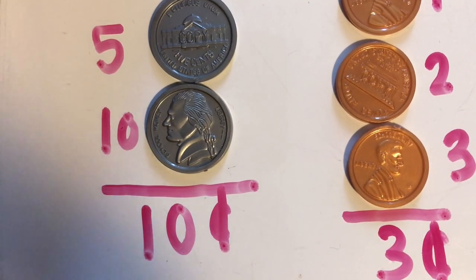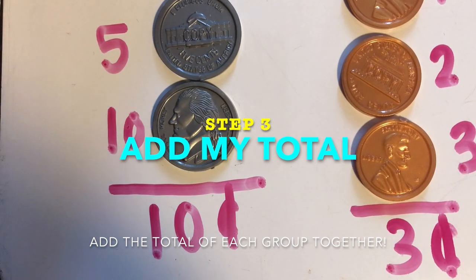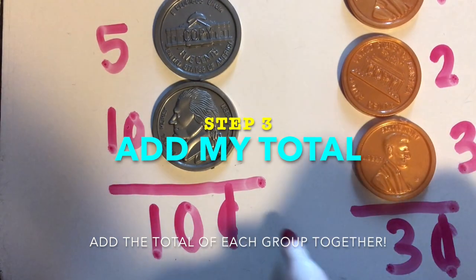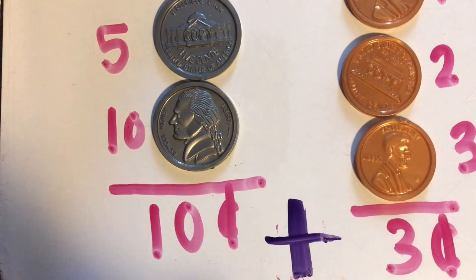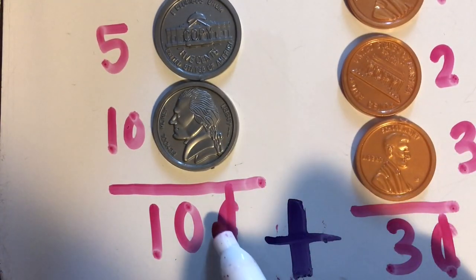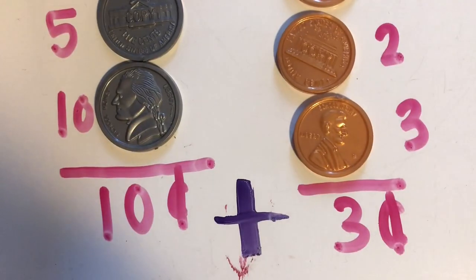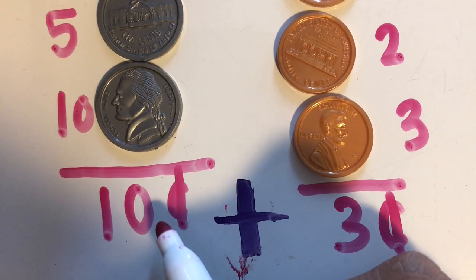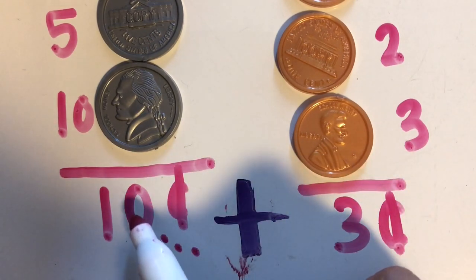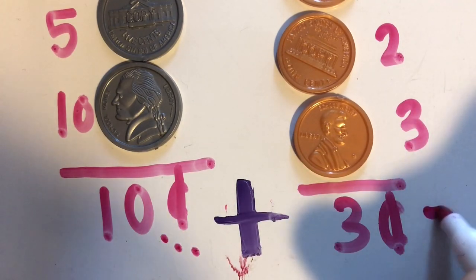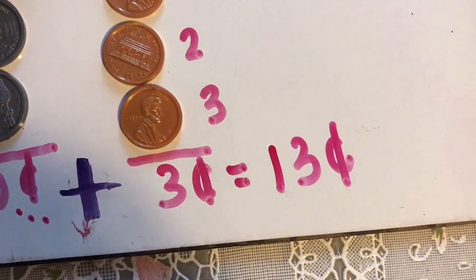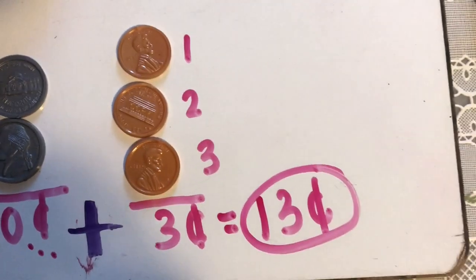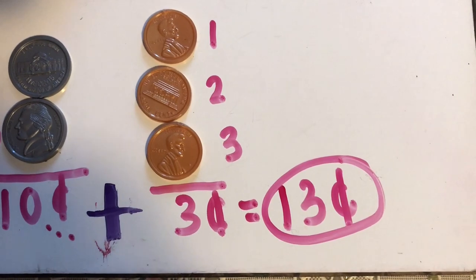Now I'm ready for step three: add total coins. Because I wrote my numbers down already, I'm going to add them together. I have ten cents plus three cents, and I can use counting on for that: ten, eleven, twelve, thirteen — because there are three more. So my total cents is thirteen cents. I have thirteen cents from my piggy bank.